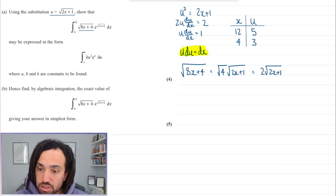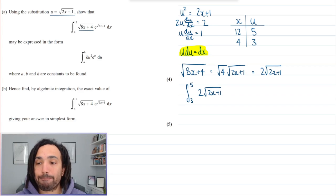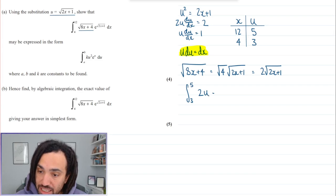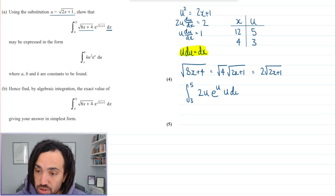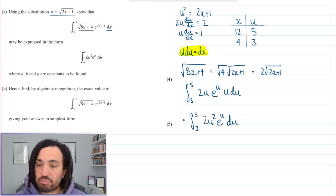I think I'm good to go now to substitute my things in. So the new integral has different limits, it's now between 5 and 3. The square root of 8x plus 4 is the same as 2 the square root of 2x plus 1, but the square root of 2x plus 1 is u, so I can just replace that with u. And we've got e to the power of root of 2x plus 1 which we know is u, and we also have dx which we know is u du.